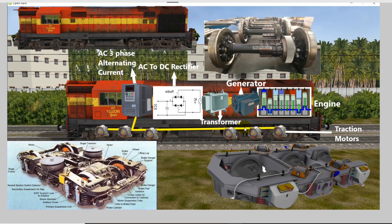The transformers and rectifiers generate a lot of heat. So there are cooling fans as well. If you look at the top view, you can see the cooling fans. This is how the diesel locomotive works.